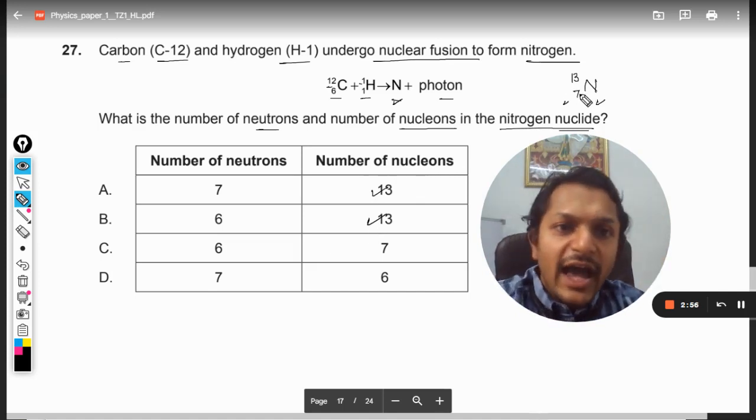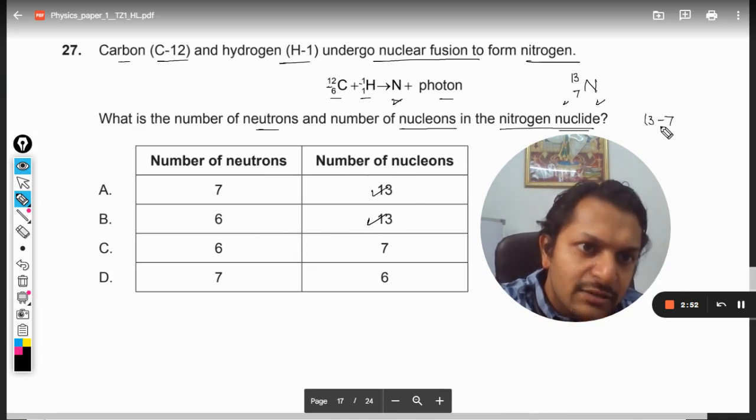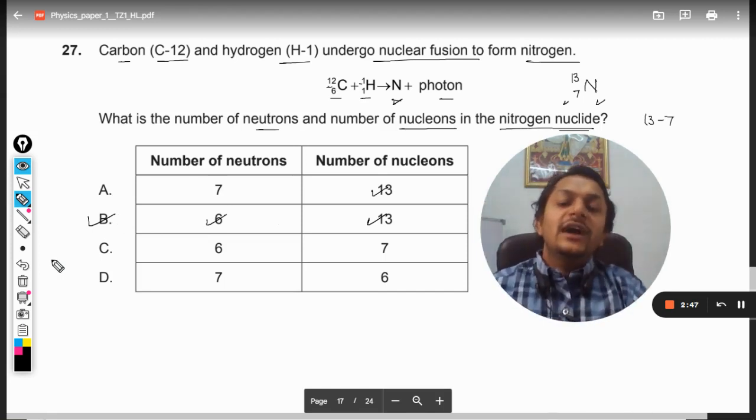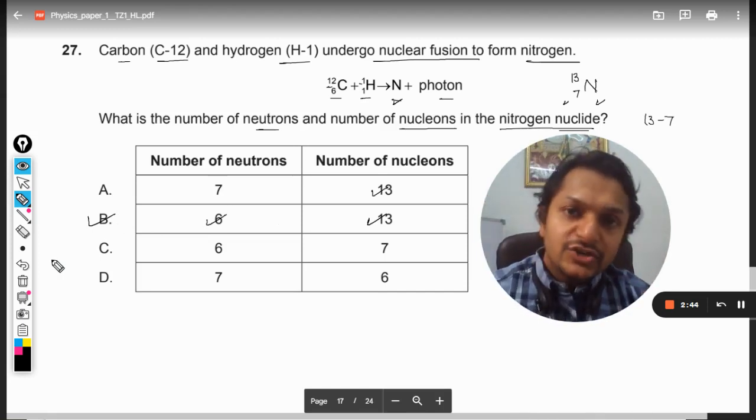And what is the number of neutrons? Number of neutrons is 13 minus 7, which is 6. So with this, we know that the answer is going to be B. So B is the right option.